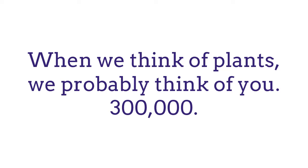Most likely, if you look around you right now, if you're outside or you can see out a window, most of the plants, at least by the numbers of species that you see, would be angiosperms — the flowering plants. Here living on the west coast, we have a lot of conifers, a lot of gymnosperm diversity, but they're still outnumbered by the angiosperms, which have over 300,000 species.